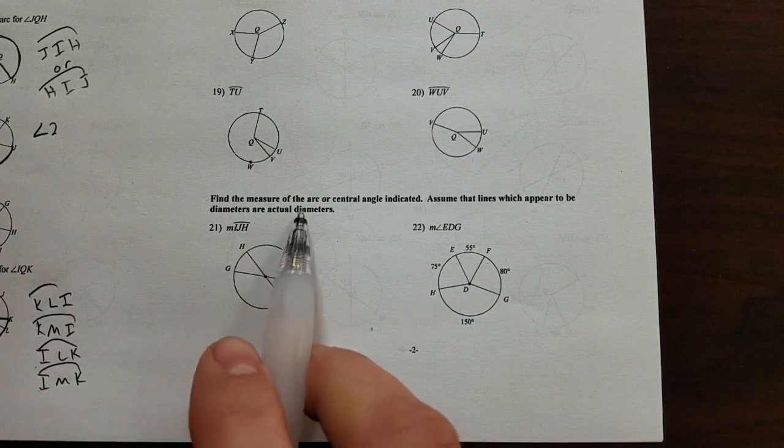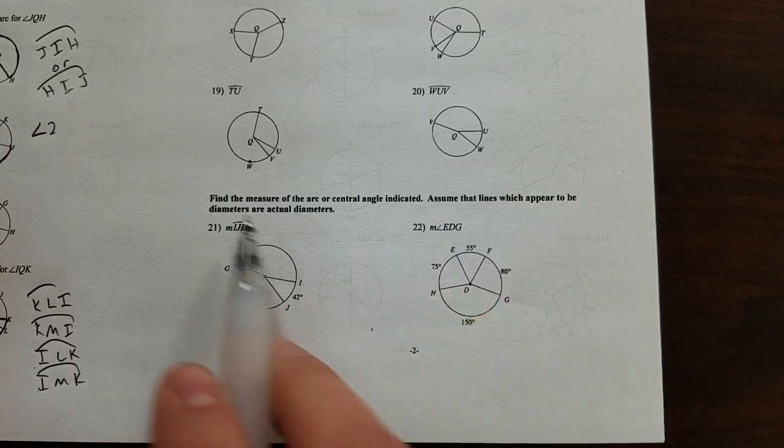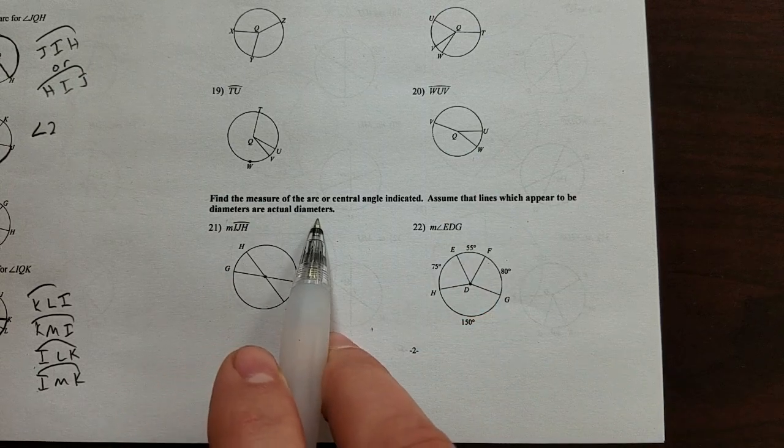Alright now, find the measure of the arc or central angle indicated. Assume that lines which appear to be diameters are actual diameters.